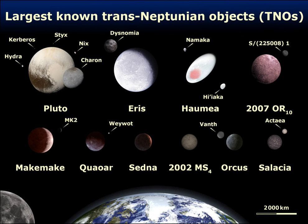In astronomy, precovery is the process of finding the image of an object in old archived images or photographic plates for the purpose of calculating a more accurate orbit. This happens most often with minor planets, but sometimes a comet, a dwarf planet, a natural satellite, or a star is found in old archived images. Even exoplanet precovery observations have been obtained.